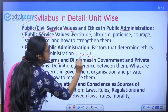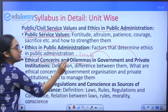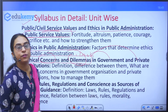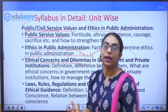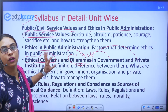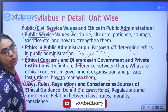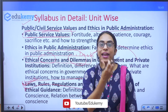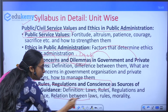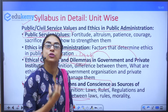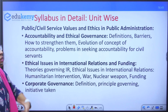The next unit covers ethical concerns and dilemmas in government and private institutions. There is a difference between a concern and a dilemma — you need to know the definitions and the differences in ethical concerns between government and private organizations, and how to manage them. Another unit covers laws, rules, regulations, and conscience as sources of ethics. You need to know the differences: law vs. conscience, ethics vs. conscience, rules vs. conscience; their definitions, differences, and relations — for instance, how does law strengthen conscience and how does conscience help in the implementation of law.